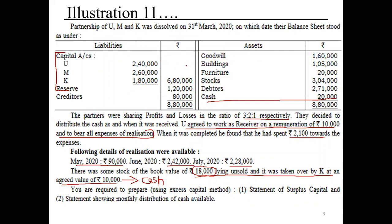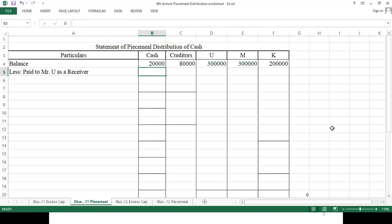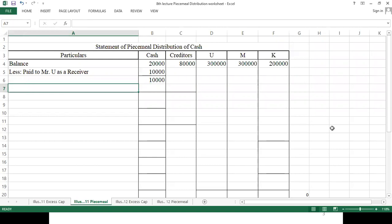We don't record realization expenses separately because U agreed to bear all expenses in exchange for a remuneration of 10,000. So first of all, we pay 10,000 to U as receiver. After this payment, we are left with 10,000 cash.